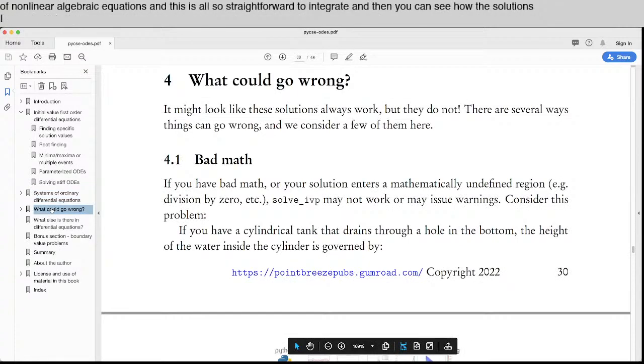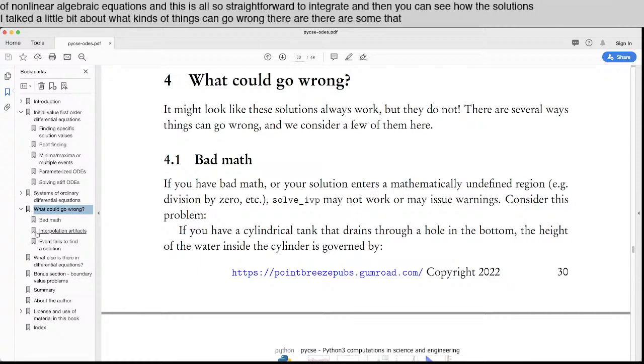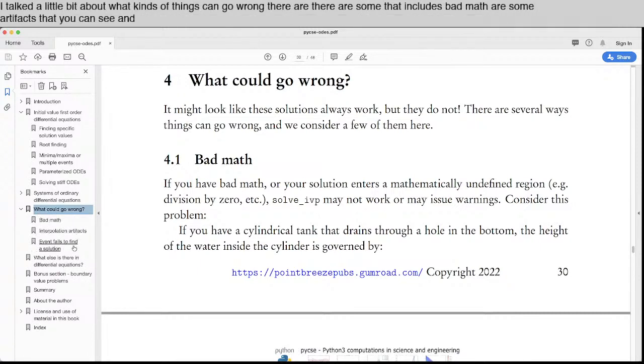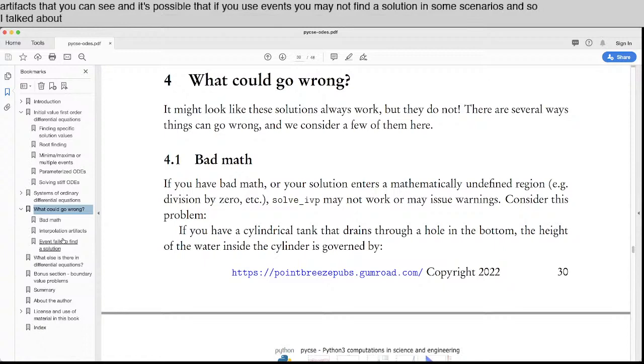I talk a little bit about what kinds of things can go wrong. There are some. That includes bad math. There's some artifacts that you can see. And it's possible that if you use events, you may not find a solution in some scenarios. And so I talk about those so you know what kinds of things could go wrong as you use it.